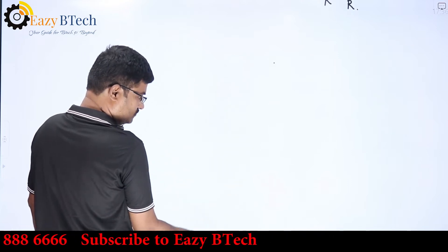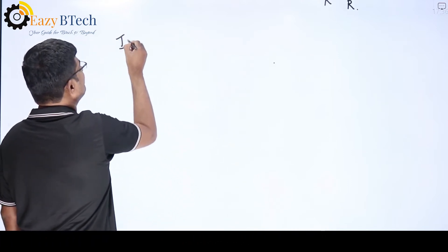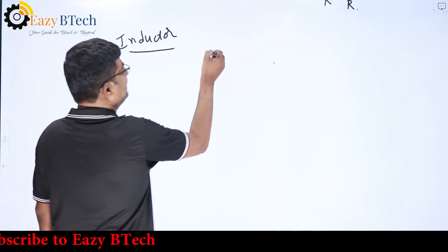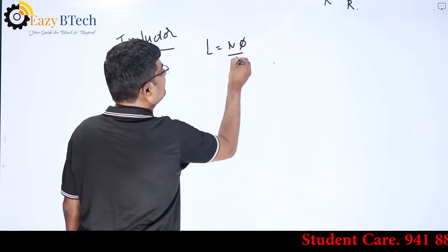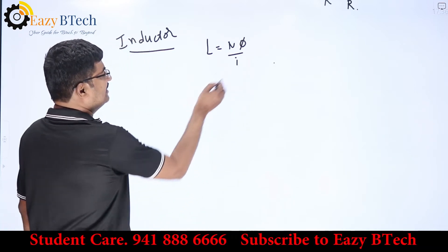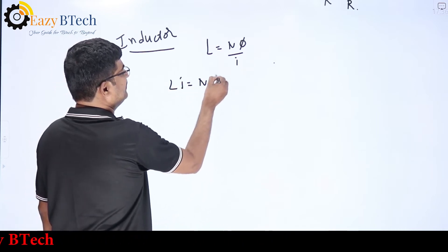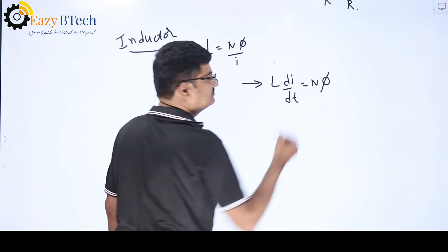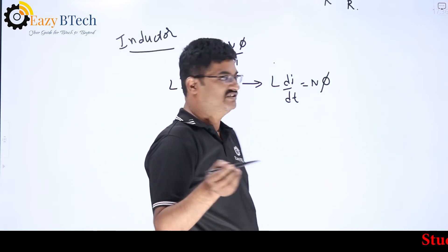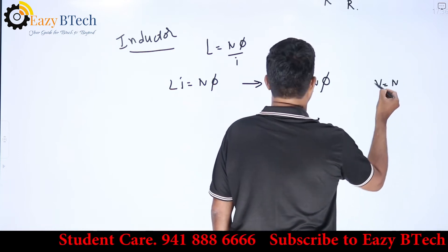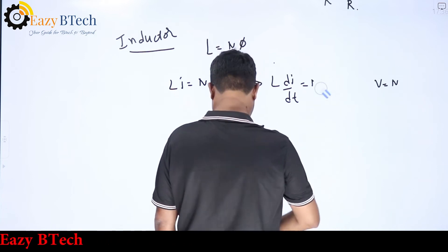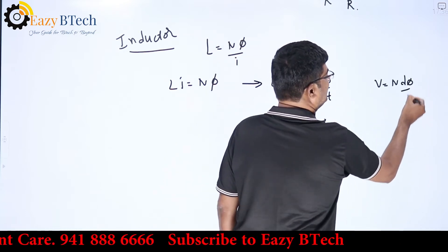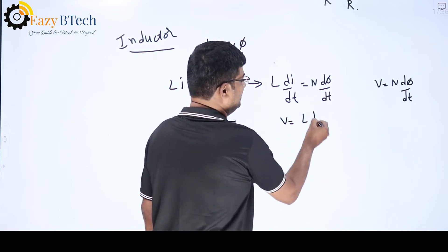Now we will derive the VI characteristics for the inductor. From the definition of inductance, L = Nφ/i. Cross-multiplying gives Li = Nφ. Differentiating: L·di/dt = N·dφ/dt. From Faraday's law of electromagnetic induction, v = N·dφ/dt. Therefore, the voltage across the inductor is v = L·di/dt.